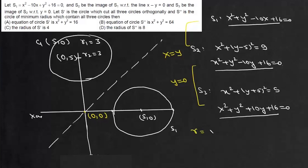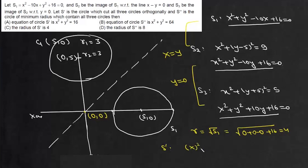The radius of S' equals the square root of S1 evaluated at (0, 0), which gives √(0 + 0 − 0 + 16) = 4. So the equation of circle S' is x² + y² = 16, which is option A, and its radius is 4, so options A and C are correct.